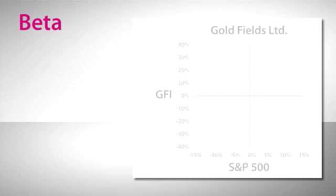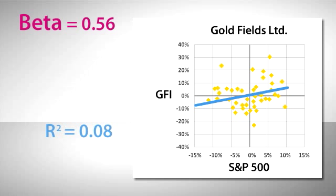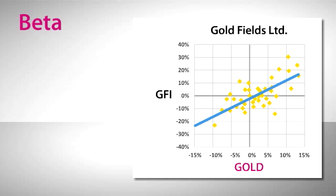Finally, let's look at a gold mining stock. This is Goldfields Limited. Its beta is only .56, but there's almost no correlation to the S&P 500. But what if instead of the S&P 500, we compared Goldfields to the price of gold itself? Well, now we see a much stronger relationship, a beta of 1.45 and a correlation of .54.